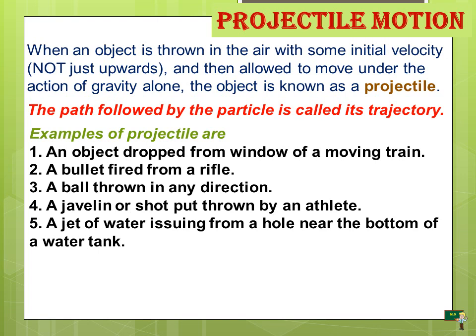Some examples of projectiles are: first, an object thrown from the window of a moving train; second, a bullet fired from a rifle; third, a ball thrown in any direction; fourth, a javelin or shot put thrown by an athlete; fifth, a jet of water issuing from a hole near the bottom of a water tank. These are some examples you can see in your day-to-day life and are the best examples of projectiles.